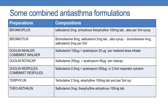Now let us discuss some of the combined anti-asthma formulations. The first preparation is Bronco Plus, containing 2 mg of salbutamol and 100 mg of anhydrous theophylline tablet; syrup is also available. The next Bronco Plus contains 8 mg of bromohexine and 2 mg salbutamol tablet; syrup is available containing 4 mg bromohexine and 2 mg salbutamol per 5 ml. Dowlin inhaler and Combi Mist inhaler both contain salbutamol 100 mcg plus ipratropium bromide 20 mcg per metered dose inhaler.